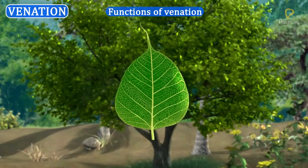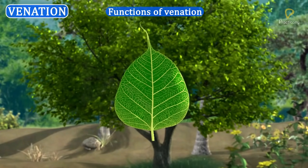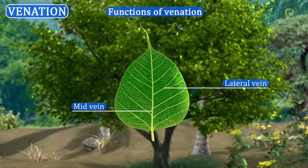Functions of venation: Veins provide rigidity to the leaf blade. Veins also act as channels for the transport of water, minerals, and food material.